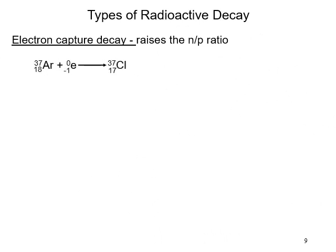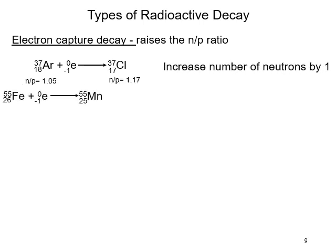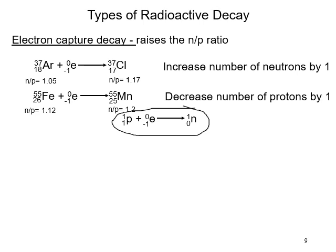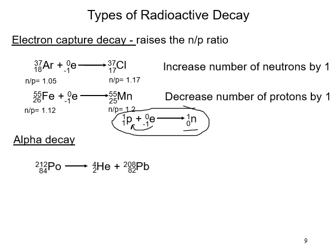Electron capture is another type of nuclear reaction. It increases the number of neutrons by one and decreases the protons by one. In the small reaction, an electron comes into the nucleus and encounters a proton, which is converted to a neutron — neutrons go up by one, protons go down by one.